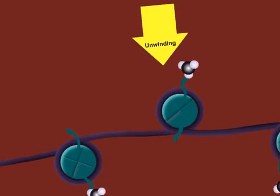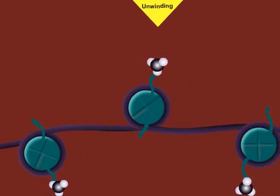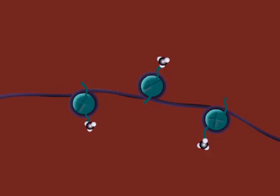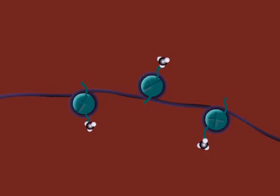Methyl groups can also attach to the tails of histones, which leads to DNA unwinding, thereby decreasing the ability of genes to be expressed and hence creating greater potential for mutation and eventually cancer, as seen occurring.